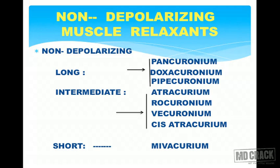Non-depolarizing muscle relaxants are classified into three categories: long-acting (pancuronium, doxacuronium, pipecuronium), intermediate-acting (atracurium, rocuronium, vecuronium, cis-atracurium), and short-acting (mivacurium).